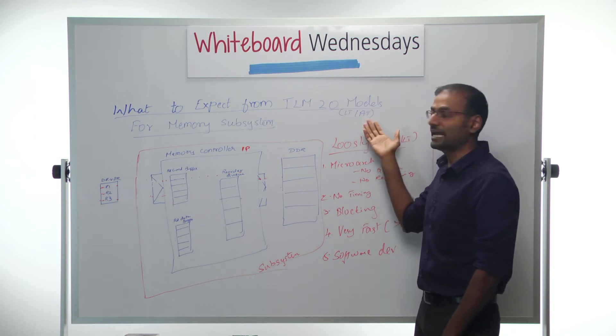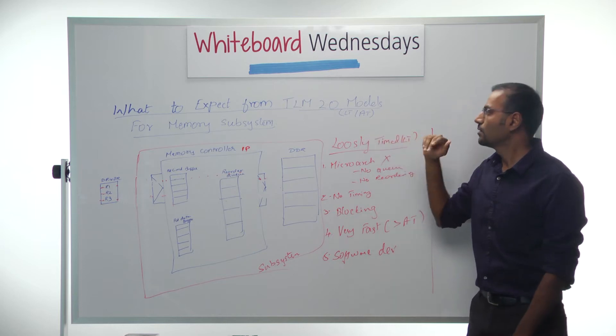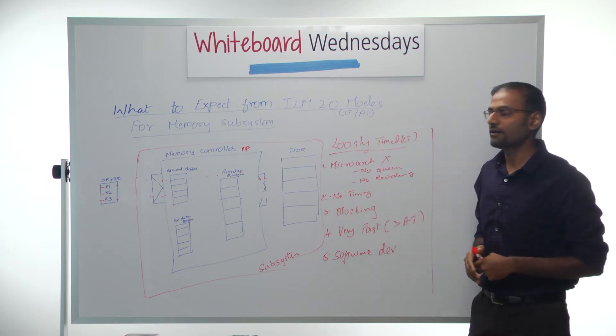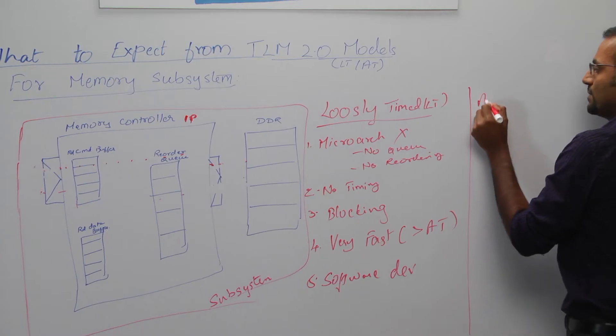If it was an AT model with respect to a memory subsystem, we have already seen in the previous video what an LT model is and how it is different from an AT model in behavior. We will see what AT is today, which is an approximately timed model.